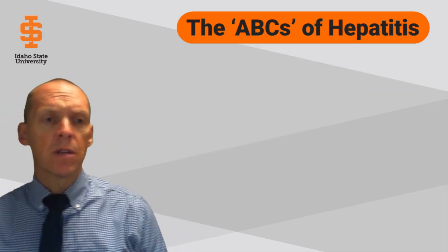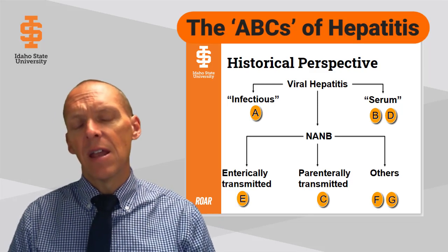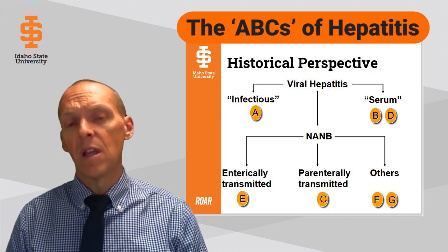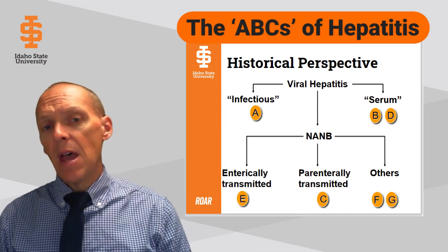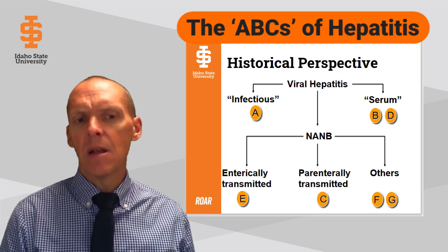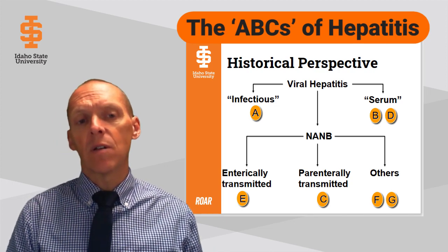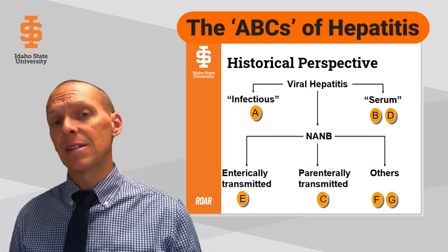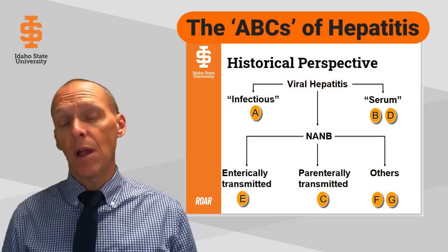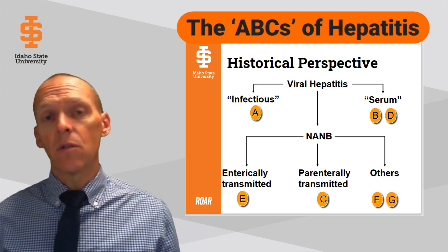Before we dive in talking about the specific types of hepatitis, if we just step back and have a historical perspective, it's important to understand that hepatitis has evolved over the course of time as science has improved and we have a better understanding. Hepatitis A used to be referred to as infectious hepatitis, partly on how it's transmitted, but that is a term you may see in some of the previous literature. But infectious hepatitis went on to be categorized as hepatitis A. Then there was serum hepatitis, which here in the U.S. is primarily hepatitis B.